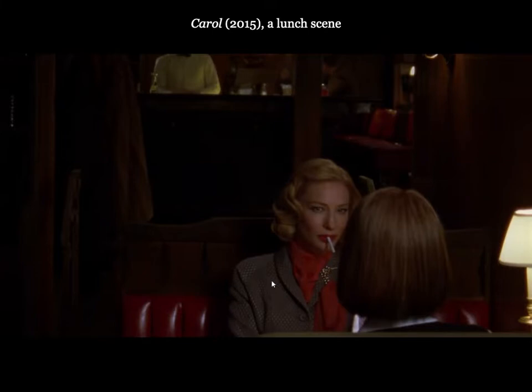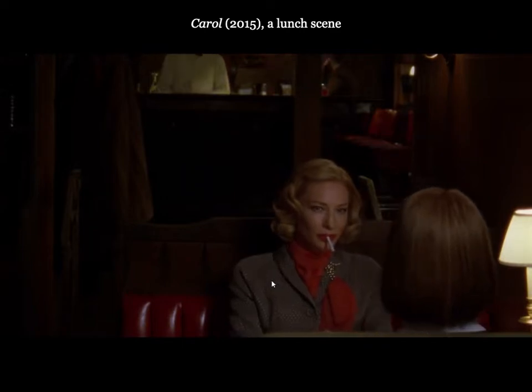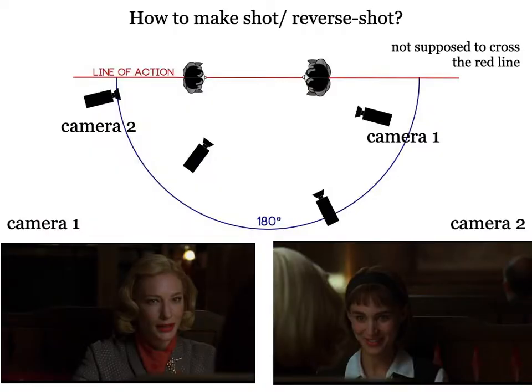Please take a look at this slide. These two shots are from Todd Haynes' 2015 film Carol, in which two characters, Carol and Therese, are having a meal together at the dining table. The camera places one character in the center of the frame in one shot, and then the next shot does the same to the other character. After shooting these shots separately using two cameras positioned at different places, filmmakers edit different shots together to create a flow, or otherwise a sense of continuity.